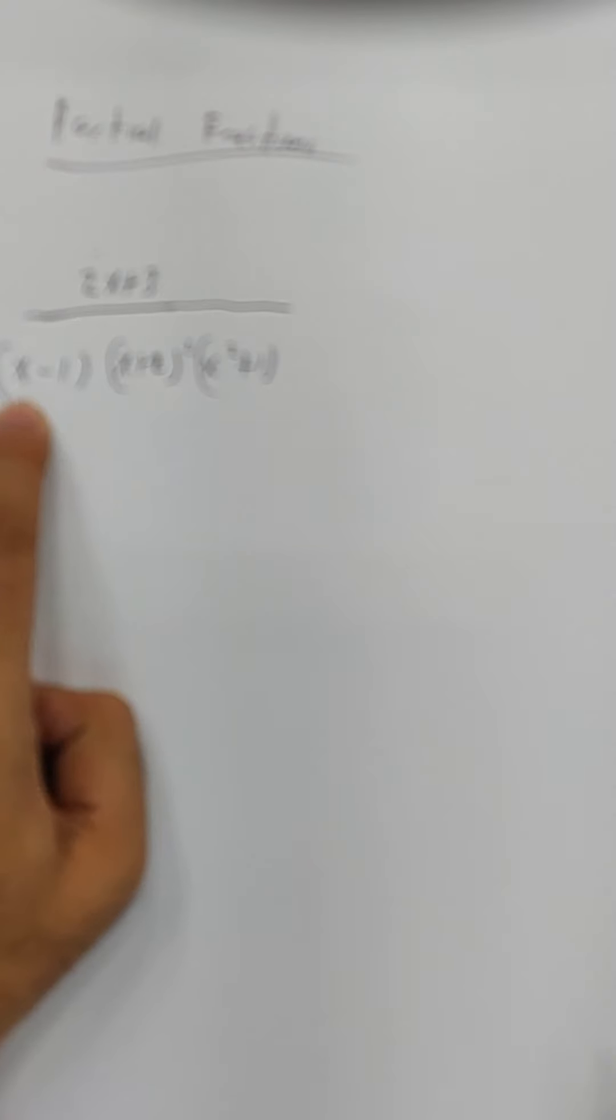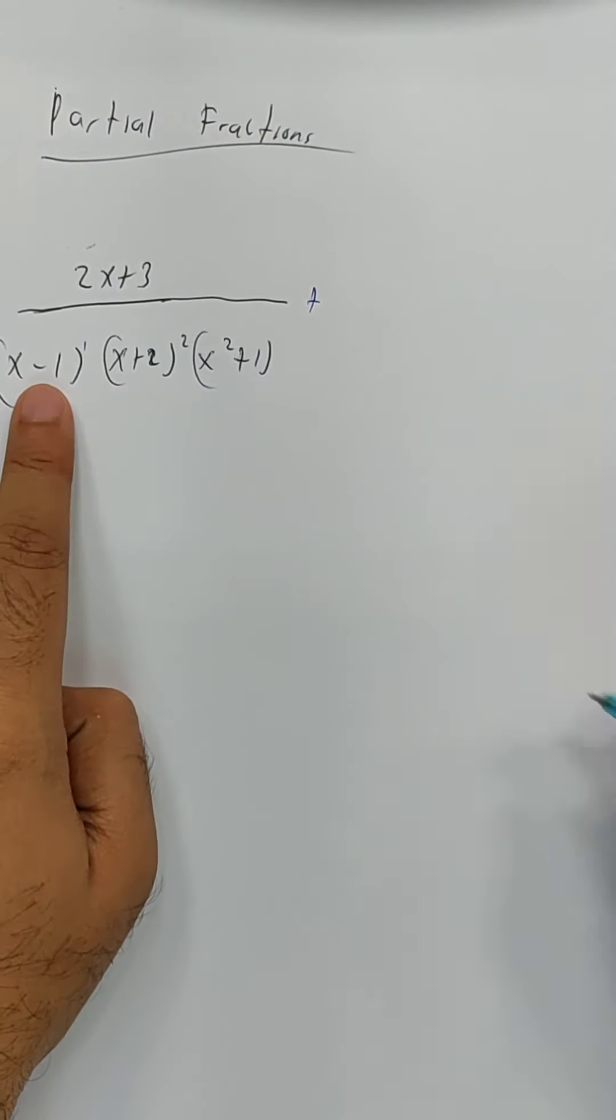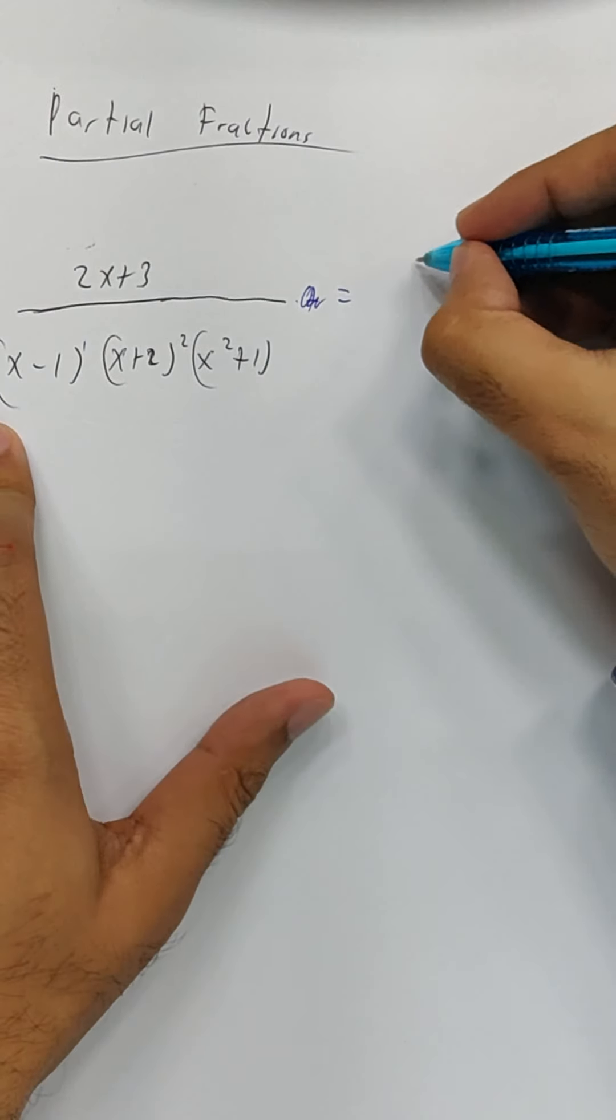Okay, the first one here, x minus 1, you see here to the power 1, is what we call linear.